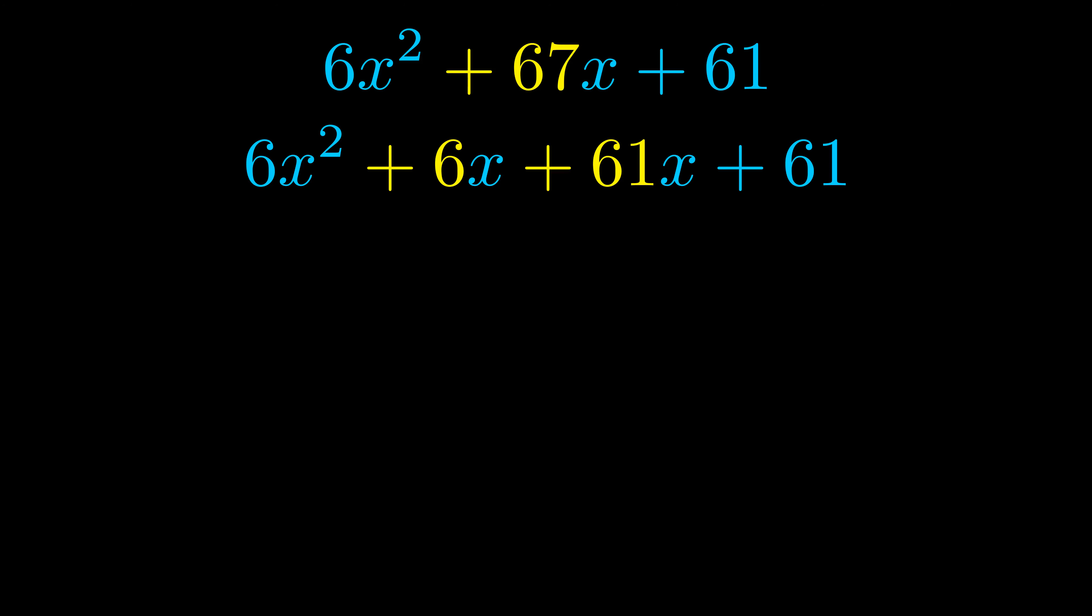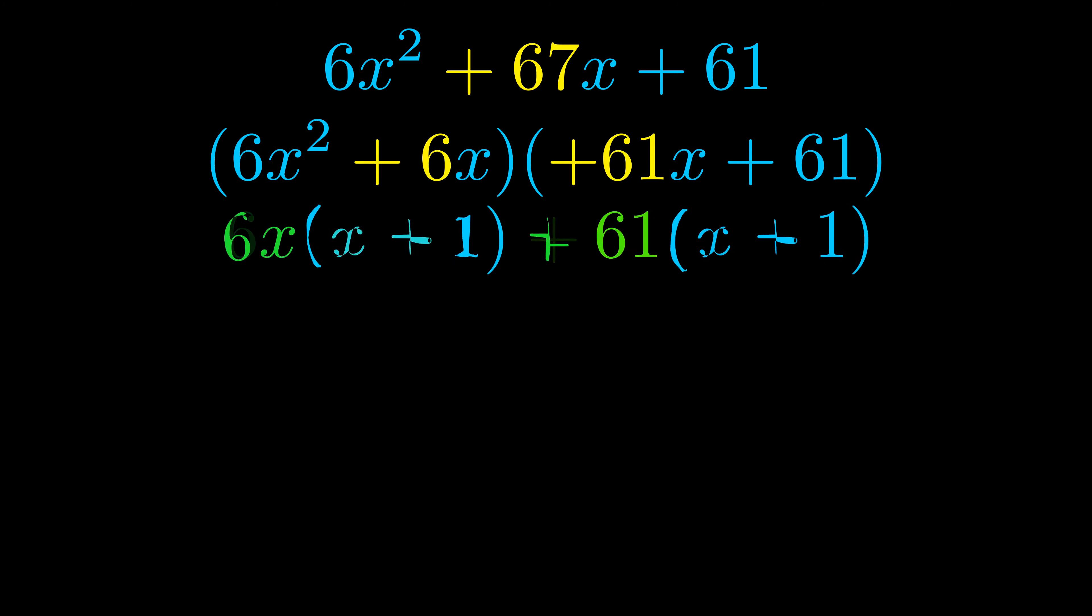Once we've done this we go ahead and we put parentheses around the first term and the last term. And we do that so that we can take the greatest common factor out of both terms. We can see the greatest common factor is now outside in green. Notice also how what remains inside of the parentheses is the same in both cases. The blue values are the same.